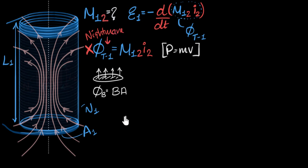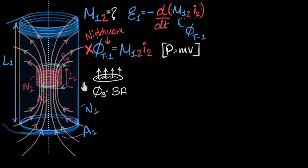We don't give up. There is one amazing thing about mutual inductance: M12 is always equal to M21. The mutual inductance of the larger coil with respect to the smaller coil always equals the mutual inductance of the smaller coil with respect to the larger coil. So instead of passing current through the smaller coil and calculating flux through the larger coil, let's do it in reverse: pass current through the larger coil and find the flux through the smaller coil.